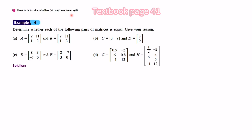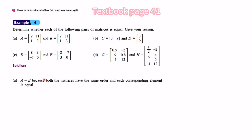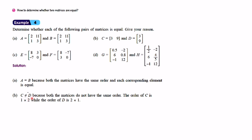How to determine whether two matrices are equal — let us look at Example 4. Matrix A equals [2, 11; 1, 3] and matrix B also equals [2, 11; 1, 3]. Matrix A equals matrix B because both matrices have the same order and each corresponding element is equal. For part B, matrix C equals [3, 9] as a row and matrix D equals [3, 9] as a column. Matrix C does not equal matrix D because they do not have the same order — C is 1 by 2 while D is 2 by 1.